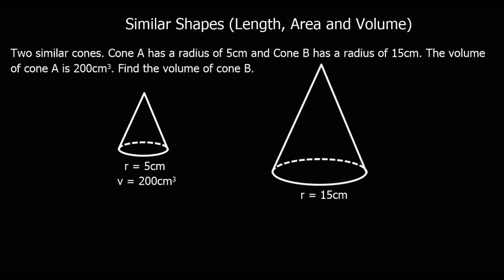We've got two similar cones. Cone A has a radius of 5, and cone B has a radius of 15. So the length scale factor is 15 over 5, which is 3. The volume of cone A is 200 — work out the volume of cone B. What you don't do is multiply the volume by 3, because that's not the scale factor for volume.